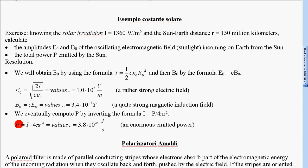So P = I × 4πR². The result is 3.8 × 10²⁶ J/s, an enormous emitted power.